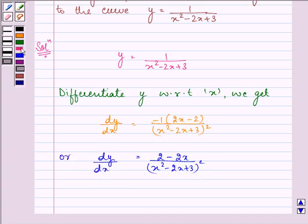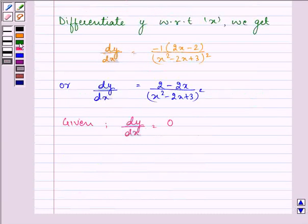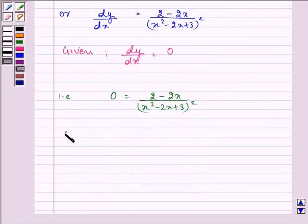Also we are given that the slope, that is dy/dx, is equal to 0. So we have 0 = (2 - 2x)/(x² - 2x + 3)² or 2 - 2x = 0, or x = 1.